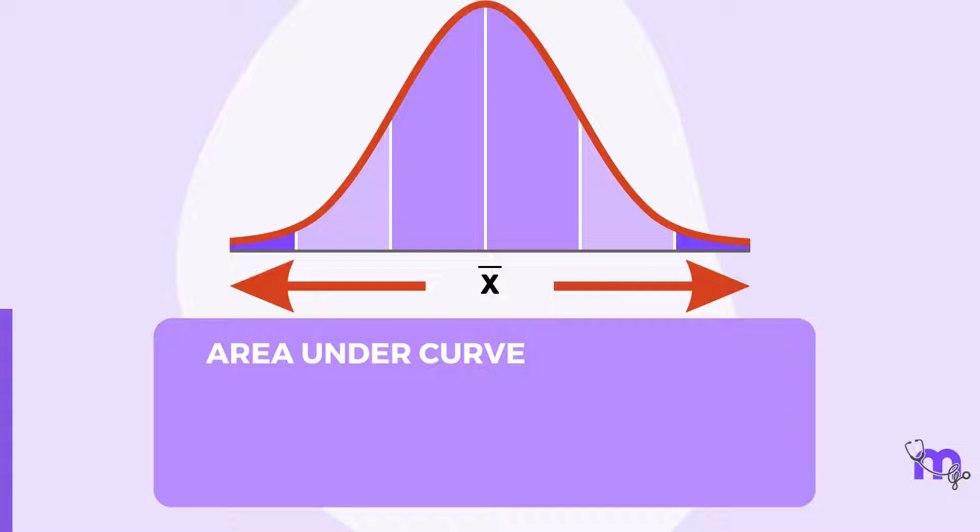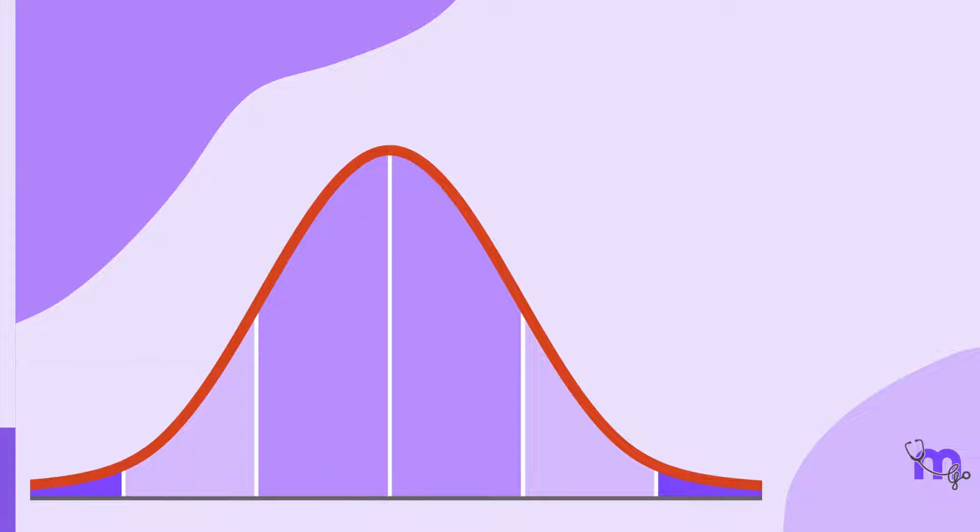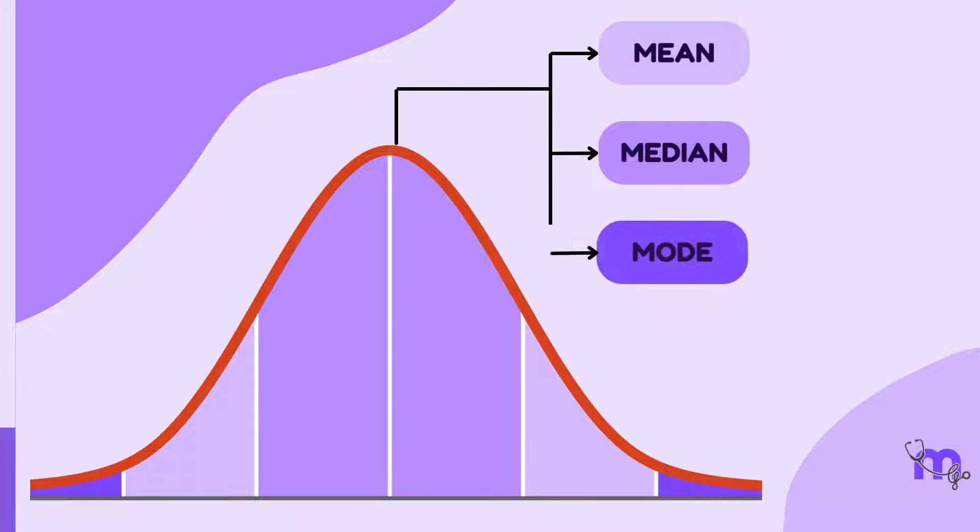Remember that the total area under the curve is always 1, its mean is 0, and the standard deviation is 1. Additionally, here all three measures of central tendency—the mean, median, and mode—coincide.